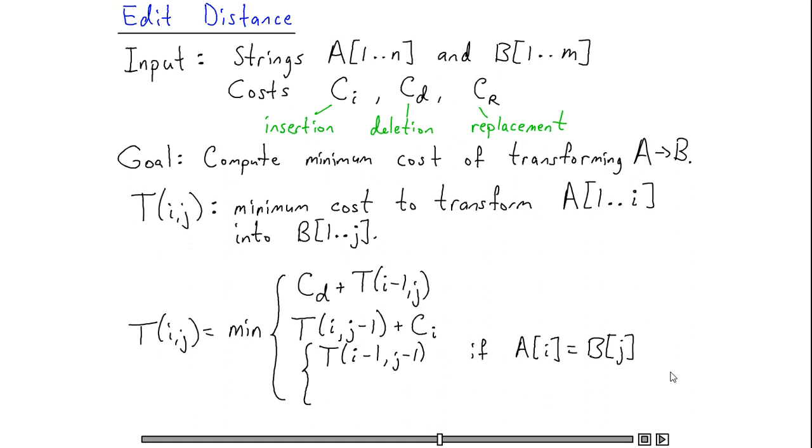Otherwise, if the i-th character of A is different than the j-th character of B, then we can do the same thing. We align the first i-1 characters of A with the first j-1 characters of B, and then we do a replacement operation where we transform the i-th character of A into the j-th character of B.